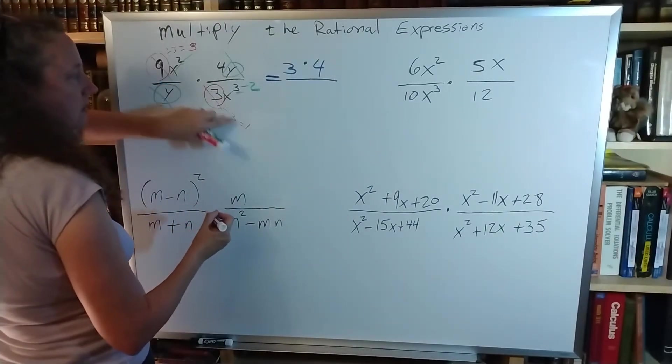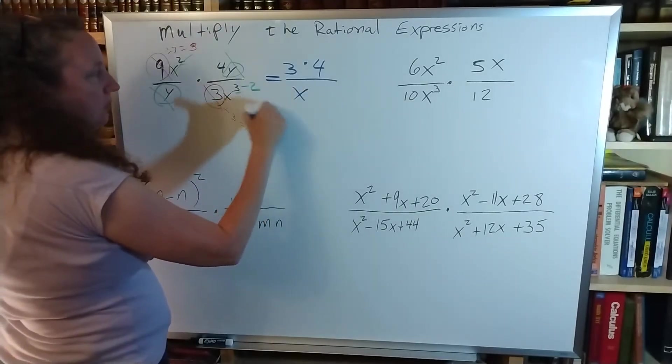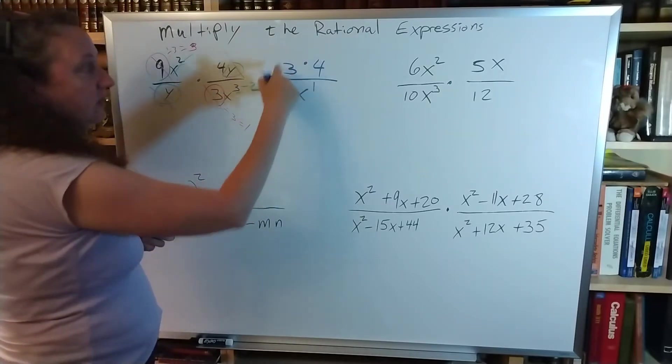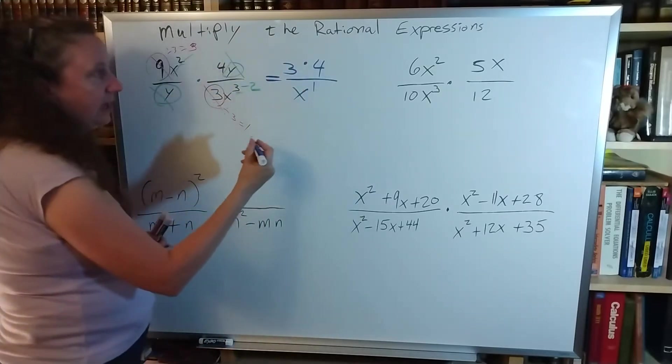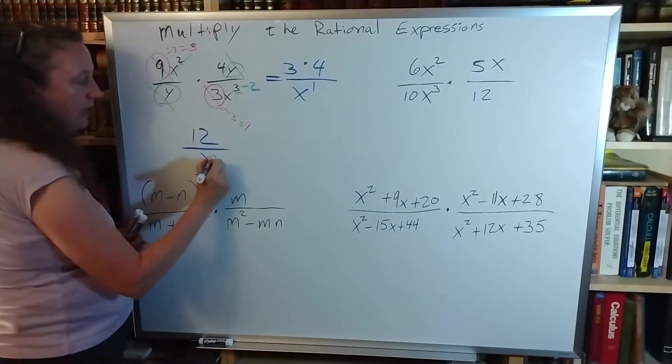The 3 became a 1. The x is raised to the 3 minus 2 power, so that's the first power. This is a lot simpler. I can see what I have, and I know now that my answer is going to be 12 over x.